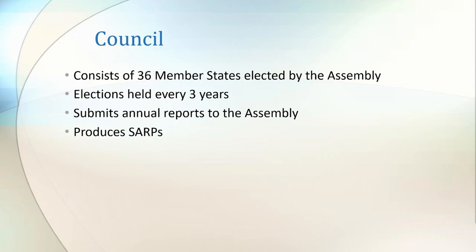The council is a body of ICAO that consists of 36 member states which are elected by the assembly. Each council serves a three-year term. Representation considers states of chief importance in air transport, states that contribute the largest provision of facilities, and ensuring that all major geographic areas are covered. The council produces annual reports covering topics such as progress on strategic objectives, new and emerging activities, and finances. It also produces the standards and recommended practices which are placed in annexes in the Chicago Convention.